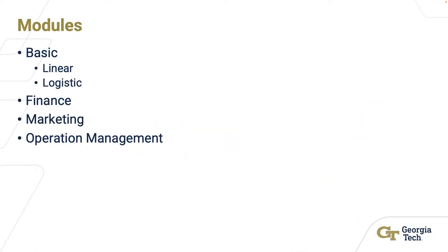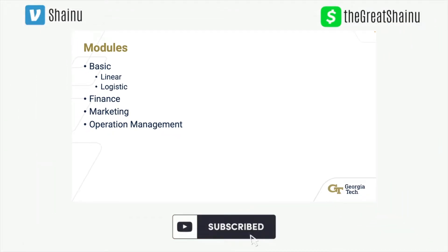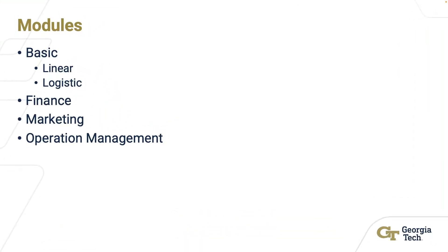So these are the modules you're going to be learning in this course. You're going to start with the basic module, which consists of linear and logistic regression, giving you a high-level overview of what they are. Then you'll move on to finance, marketing, and operations management. We have four homework assignments in this course, and each of these modules will have one homework accompanying it.